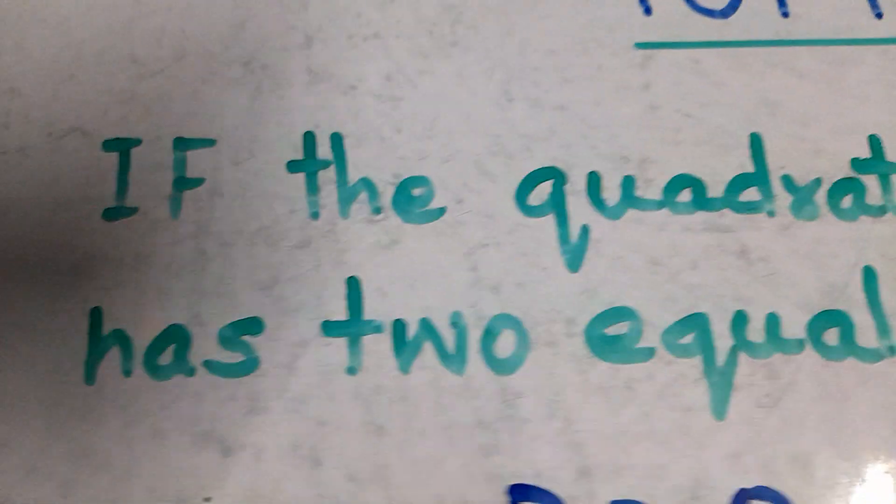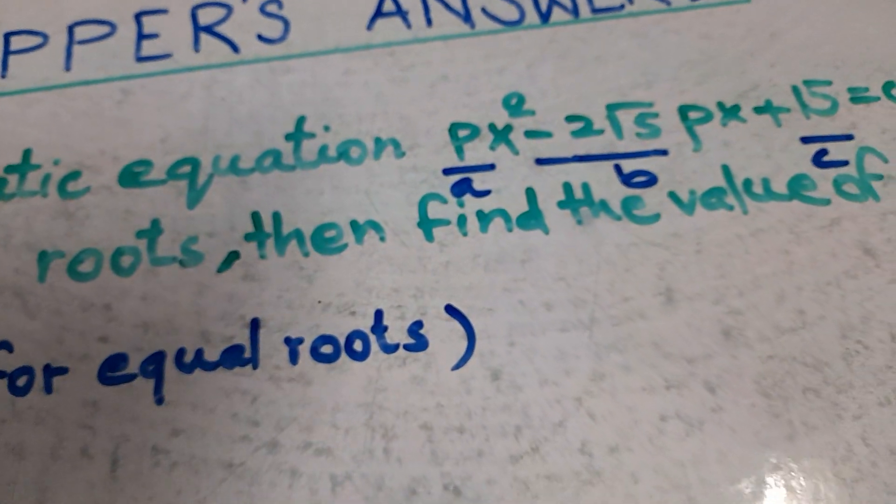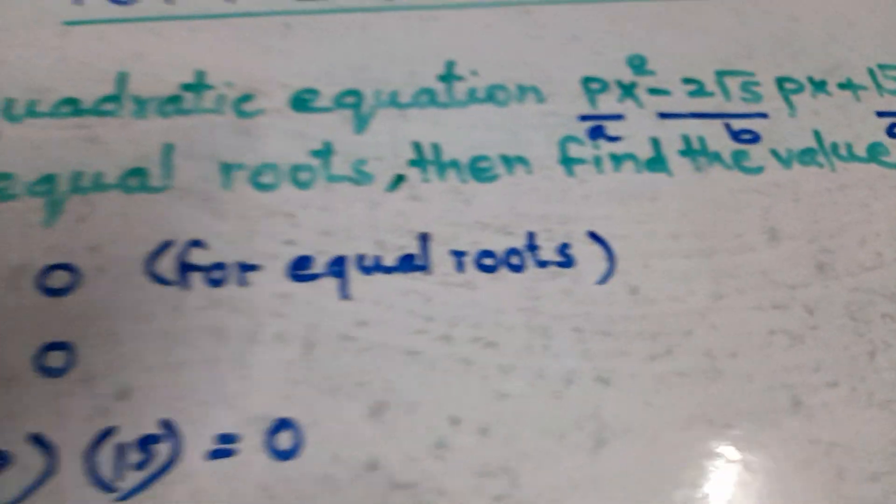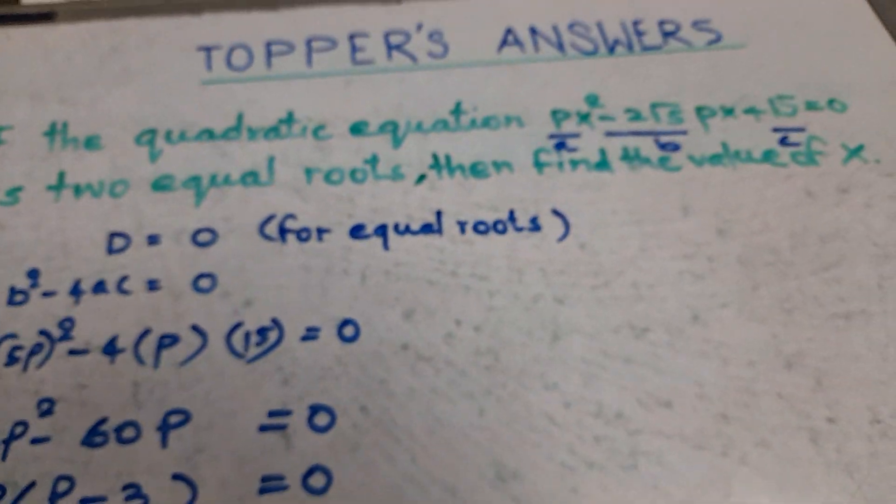Toppers answers for CBSE board exam class 10. The question is: if the quadratic equation px squared minus 2 root 5px plus 15 equals 0 has two equal roots, then find the value of p.